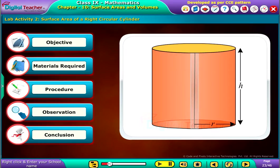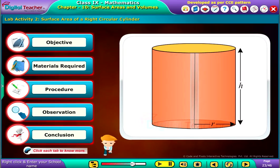Let us do a lab activity for finding the surface area of a right circular cylinder. Click each tab to know more.